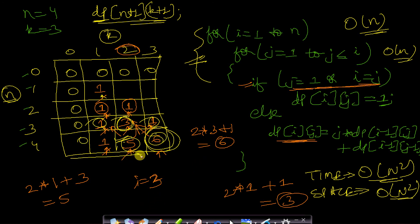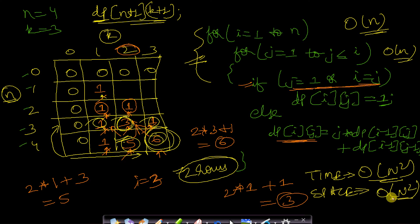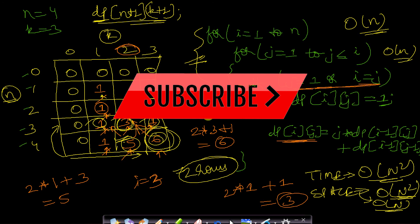There is a space optimization: to compute any row, we only need the previous row's values. So at any time we only need to store two rows, reducing space complexity from O(n²) to O(n). These are the solutions to find the number of ways to partition a set into k subsets — recursive and dynamic programming. Please like and subscribe for more programming videos.